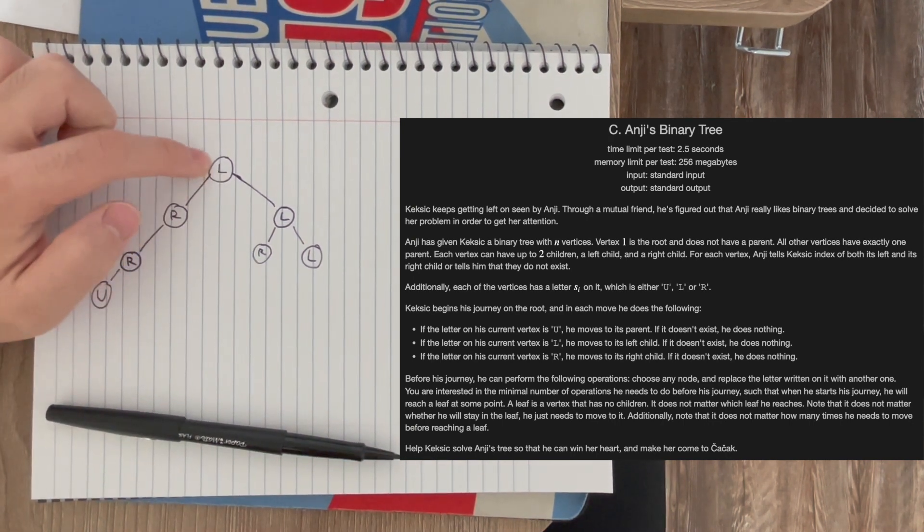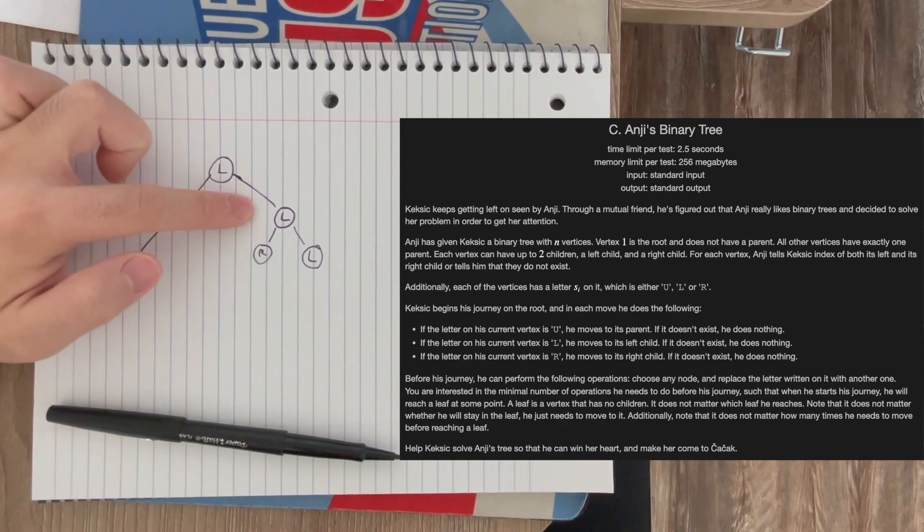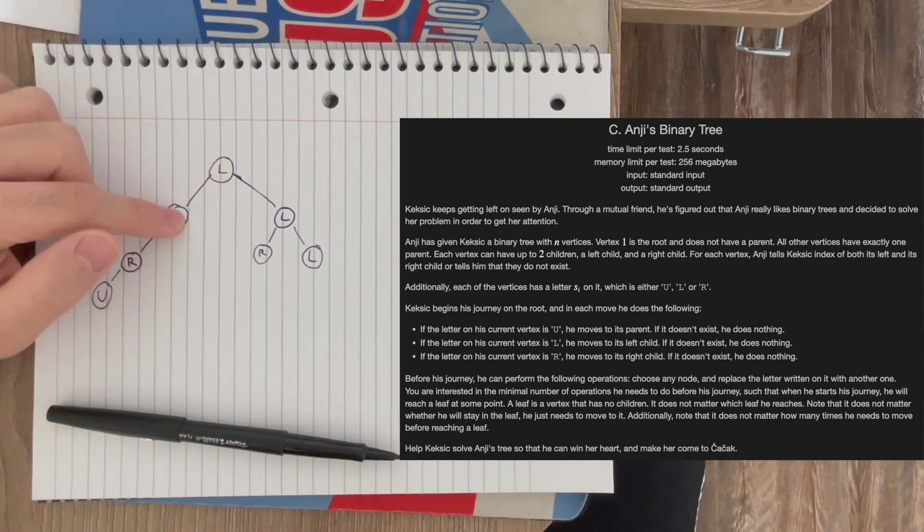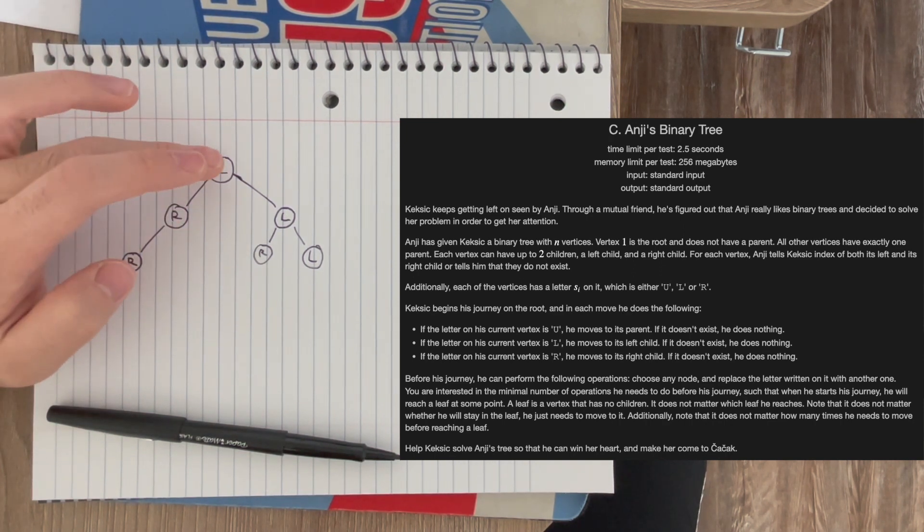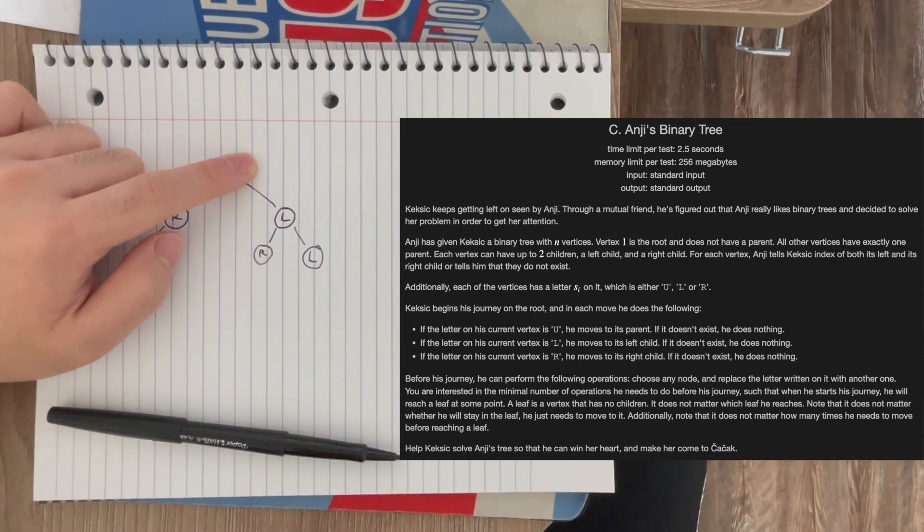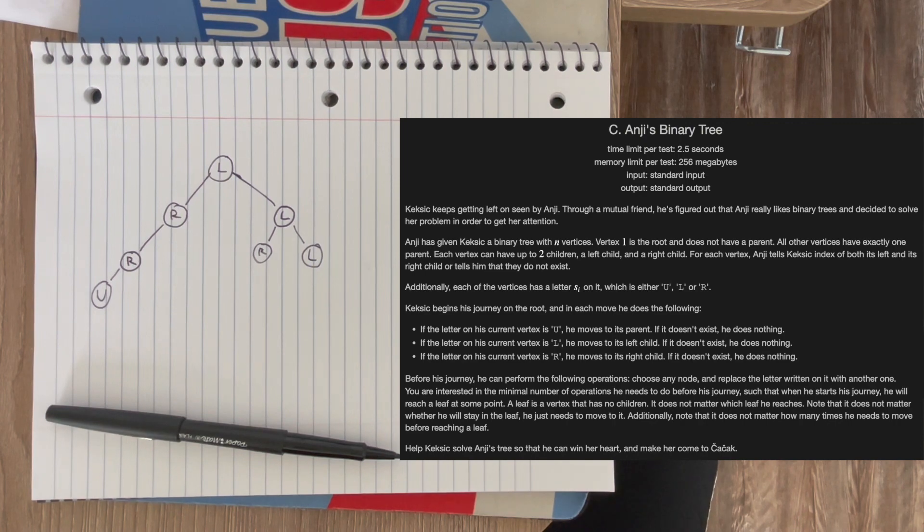So let's start at the root and consider going to the left subtree or the right subtree. If the label of the root is L, then that means we're going to be sent to the left subtree without any additional cost, because that's just what the default path is. If we were to go to the right subtree, then we would have to change this label from L to an R, and so we would have to incur one unit of cost to go to the right subtree.